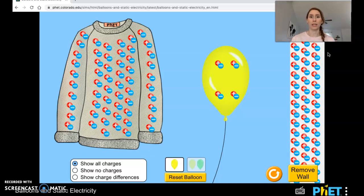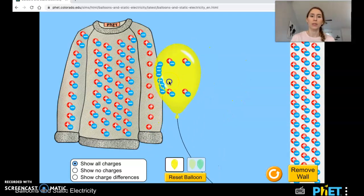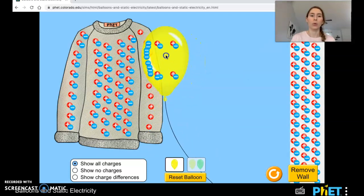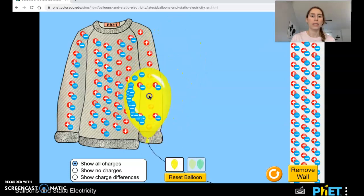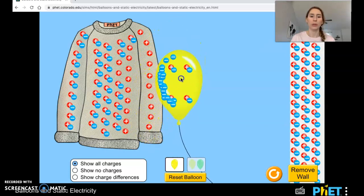But we know, especially from what you did last week, what's going to happen if I take this balloon and rub it against the sweater. The balloon is made of plastic. The sweater is some like wool material. Hopefully you can see what's happening as I rub the balloon along the sweater.